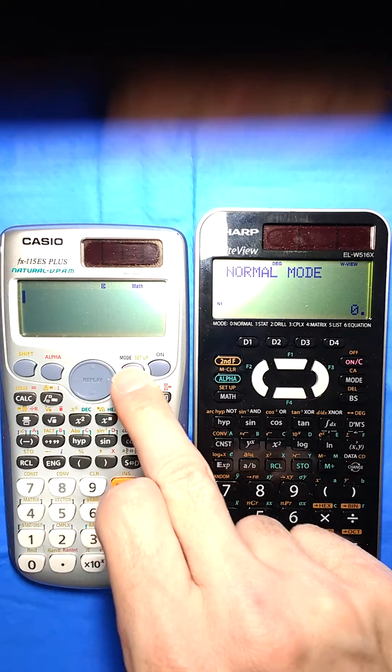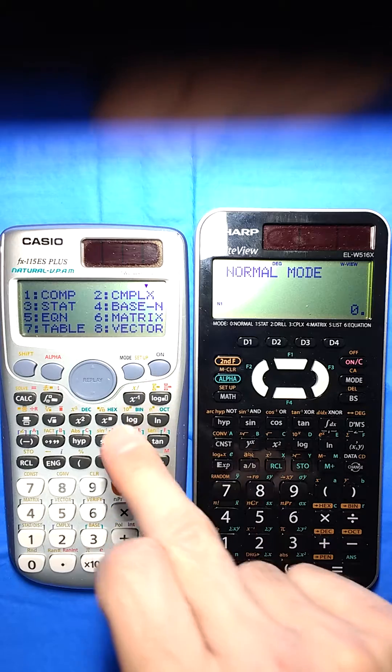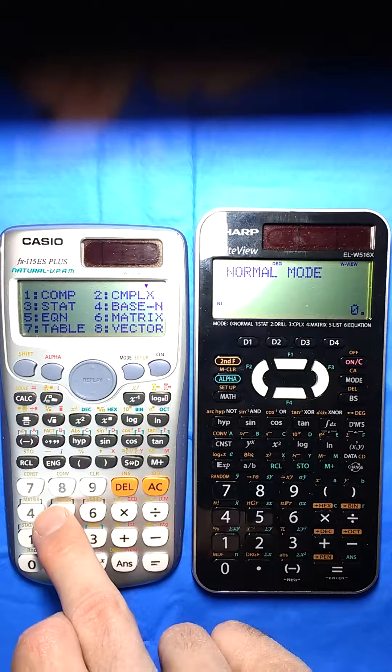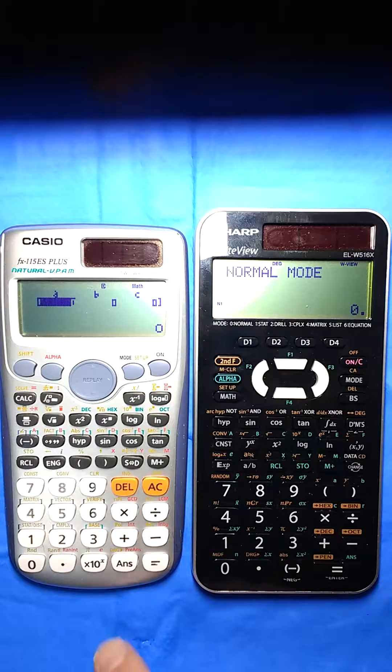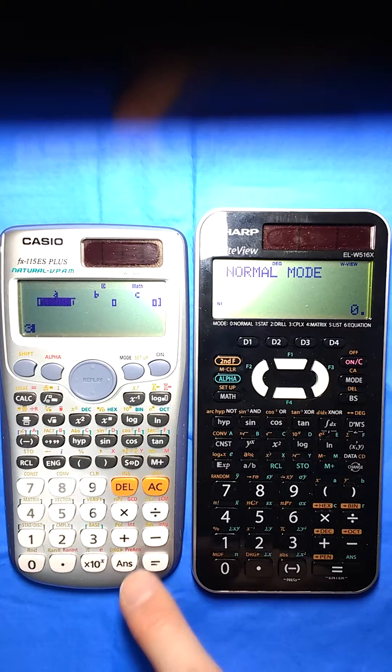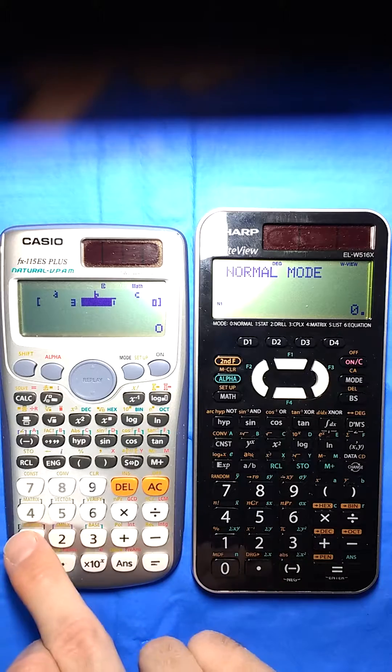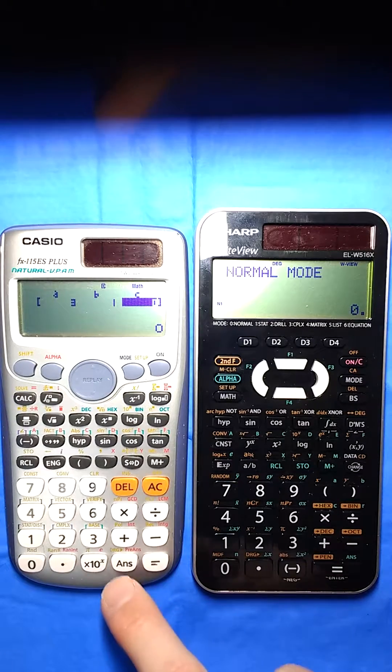If I want to use quadratic solving, I do have to go into a different mode on both these calculators. So I go into equation, and I'm doing a quadratic, which is number 3, and then it asks me for the coefficients. So I could say 3x squared plus 1x minus 1.